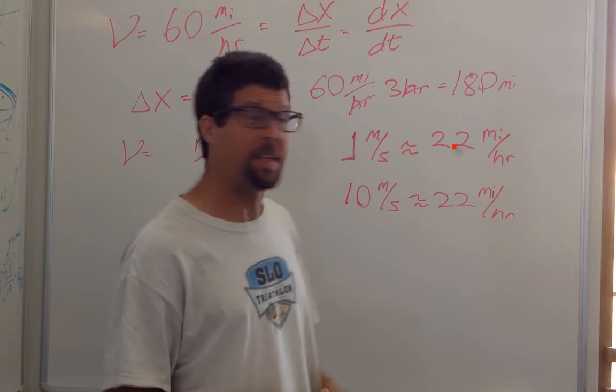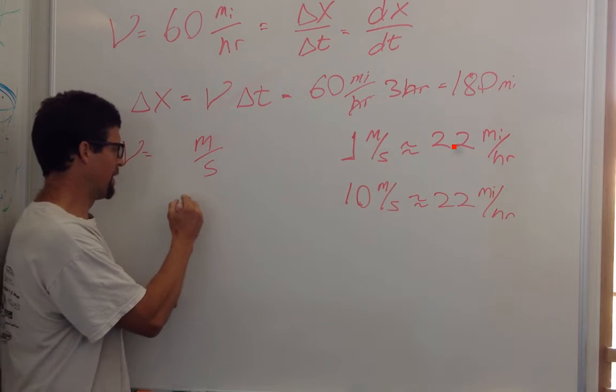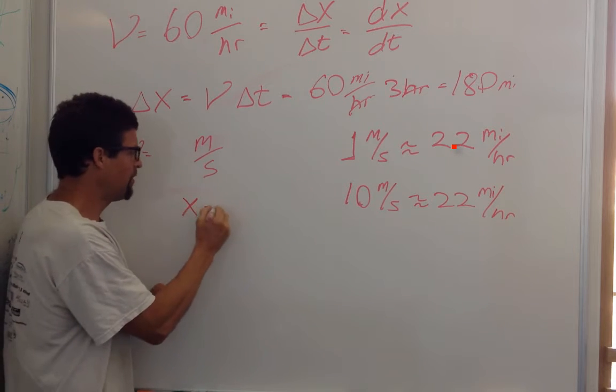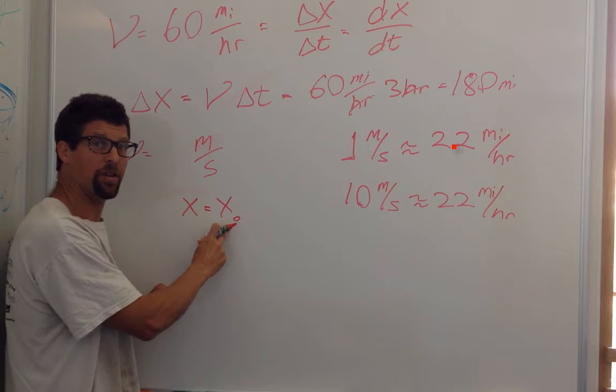Okay, so if you've got the 55 meters, what you know already is this formula, the displacement. My position now is equal to my initial position, right, plus the change in position.